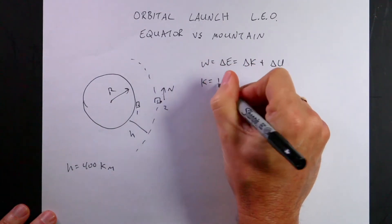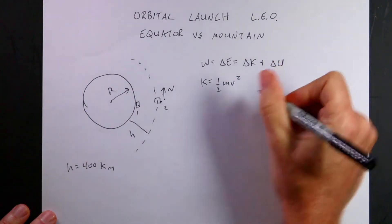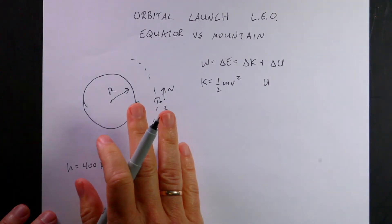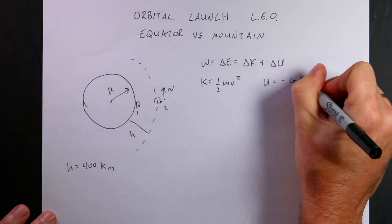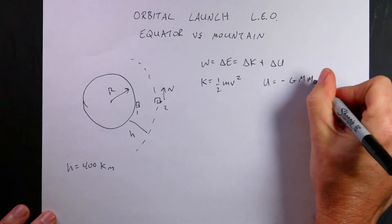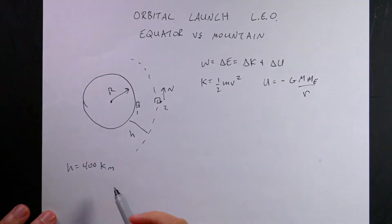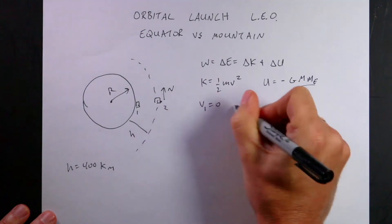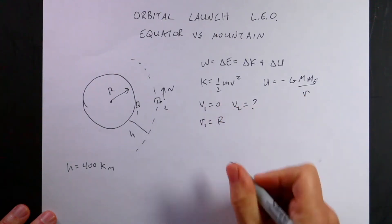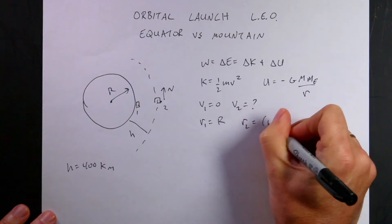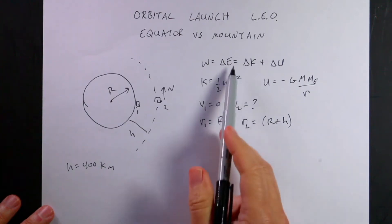We can define kinetic energy as one-half mv squared, so I need to know how fast it's going — it was going zero right here. For potential energy of a gravitational object, we have to use the real gravitational potential energy, which is negative G times mass of the spacecraft times mass of the Earth over r, where r is the distance from the center to that location. So v1 is 0, and r1 is the radius of the Earth. R2 is going to be r plus h.